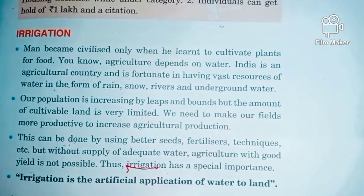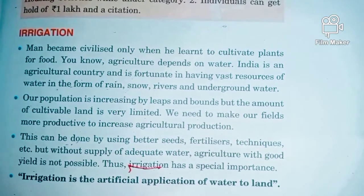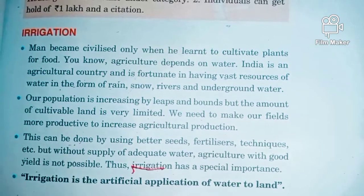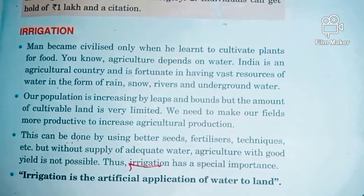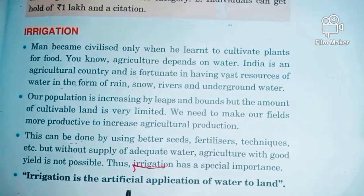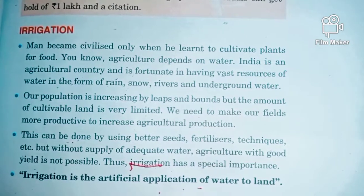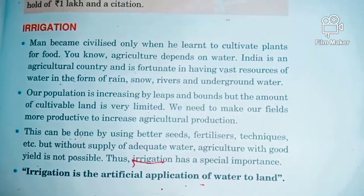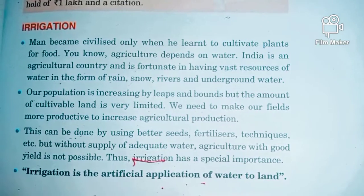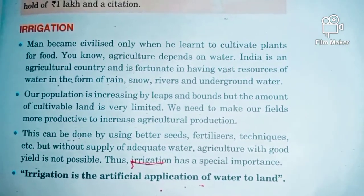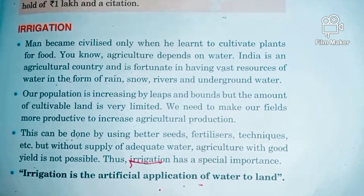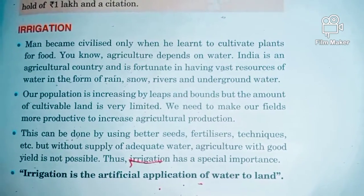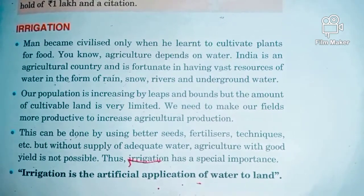The importance of water is inevitable, and for this we can use irrigation as a source of special importance. Irrigation is the artificial application of water to the land, and it is very important for civilized society and food production. Let's look at from the Indian point of view what the methods of irrigation are and why we need them.